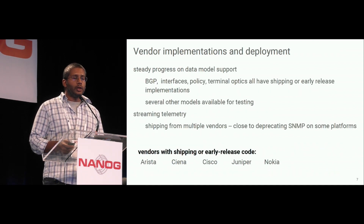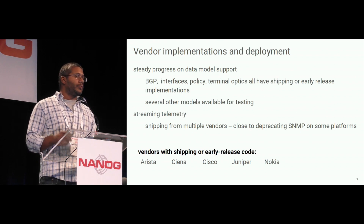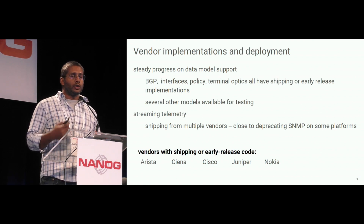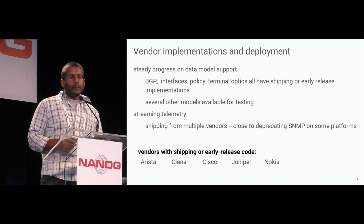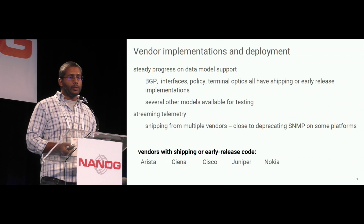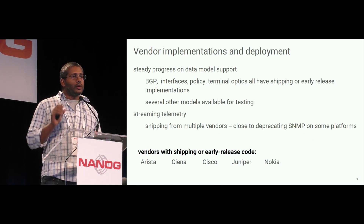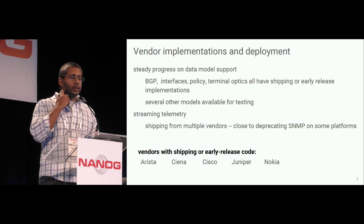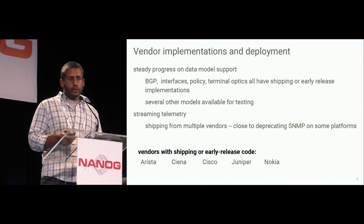On vendor implementations, we've had a lot of steady progress building native support on target devices for the data models. The first models — BGP, interfaces, routing policy, and terminal optics — all have implementations either shipping or in early release. There's shipping streaming telemetry capability from multiple vendors. We've actually deployed streaming telemetry in production and are down to the last 1% of data needed to fully deprecate SNMP in our network for at least one platform. Vendors participating with shipping or early release code include those listed here — it's been a great partnership with broad industry-wide support.